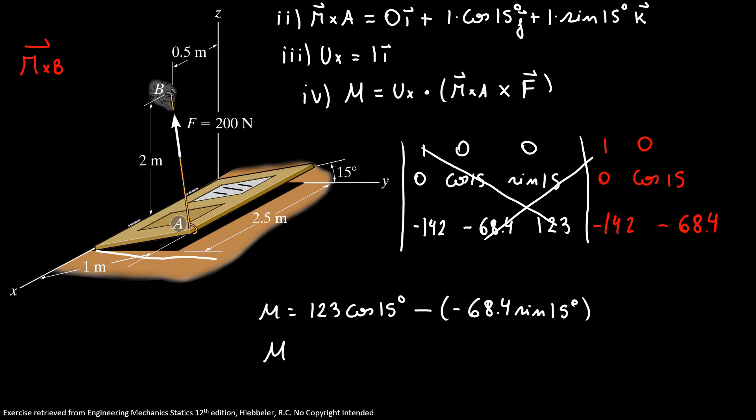So our moment about our hinged axis is equal to 136.5 newton meters. So for our final answer, the moment in X is equal to 137 newton meters. This is our final answer.